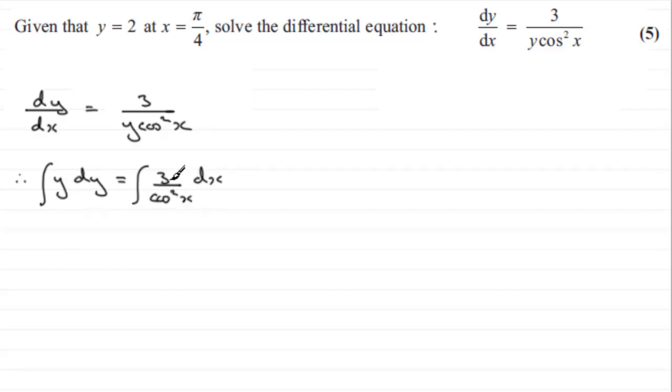Now, the next step is to think about how we're going to integrate these. This is okay to integrate—this will be y squared over two. But for this one here, 3 times 1 over cos squared x, and 1 over cos squared x is the same as sec squared x, so I can rewrite this as the integral of y dy equals the integral of 3 sec squared x.